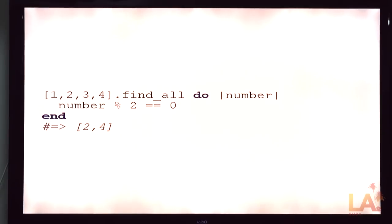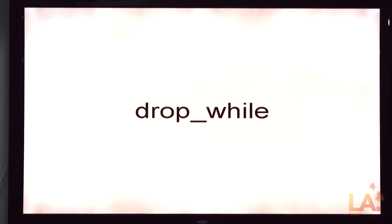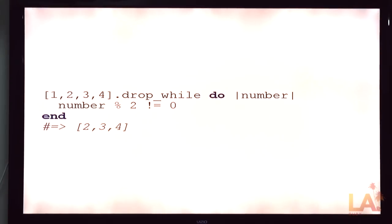Find all, same thing, that we get an array of everything that matched. Drop while, a little bit less obvious, more obscure. Skips items that match the block. As soon as you get one that doesn't match, you get the rest of the array. One of those like can be handy sometimes.